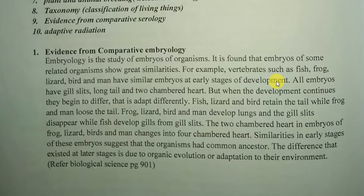At first, because they are all within, they depend on nutrients from the mother, or if they are reptiles or birds, they depend on nutrients from the egg yolk. Then they begin to differentiate. Fish, lizard, and bird retain the tail while frog and man lose the tail. Frog, lizard, bird, and man develop lungs and gill slits disappear, while fish develop gills from gill slits. The two-chambered heart in embryos of frog, lizard, bird, and man changes into a four-chambered heart. Similarly, the early stage of these embryos suggests that organisms had a common ancestor.